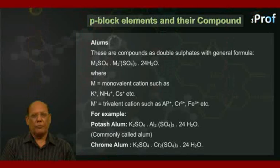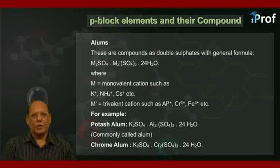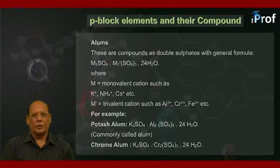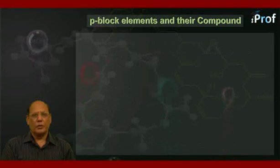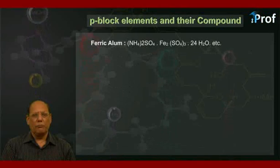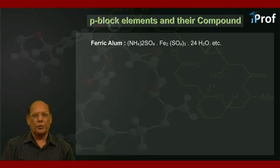Chrome alum has the formula K2SO4·Cr2(SO4)3·24H2O. Similarly, ferric alum would be written as (NH4)2SO4·Fe2(SO4)3·24H2O.